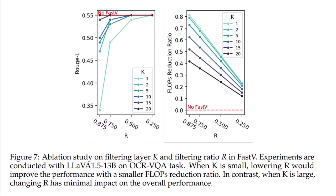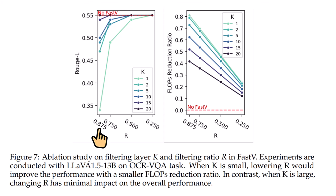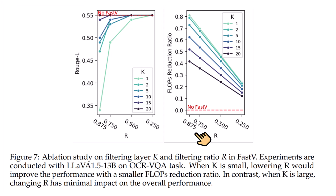The final figure shows: selecting layer 20 and pruning 87.5% of tokens results in no performance difference, whereas selecting layer 1 and pruning 87.5% causes significant performance reduction. Pruning at deeper layers is safer. Even at layer 20, if 87.5% of tokens are pruned, the remaining 12 layers see only 12.5% of the original input, achieving a FLOPs reduction ratio of up to around 40%.